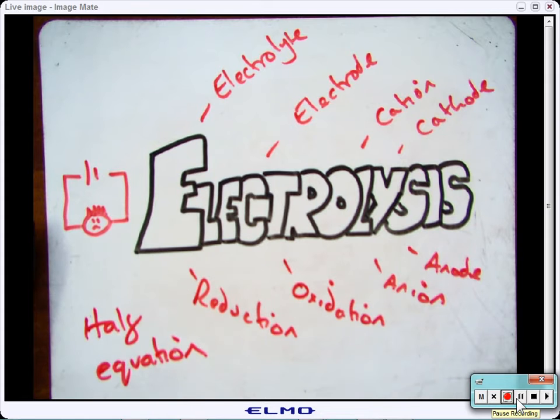If you remember back to what we did in the additional topic, you should be able to remember that electricity cannot be passed through solid ionic compounds. They have to either be molten or dissolved for electricity to be passed on.